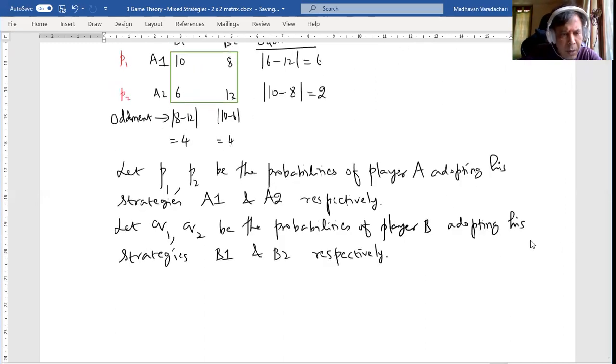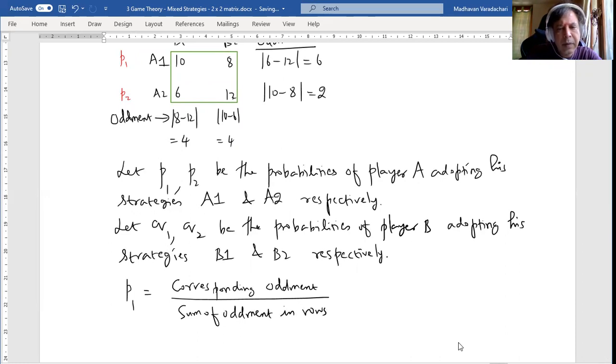P1 can be found as the corresponding ornament divided by sum of ornaments in rows. P1's corresponding ornament is 6, divided by sum of the ornaments 6 plus 2. So that works out to 6 by 8. This can be simplified, so it is 3 by 4.